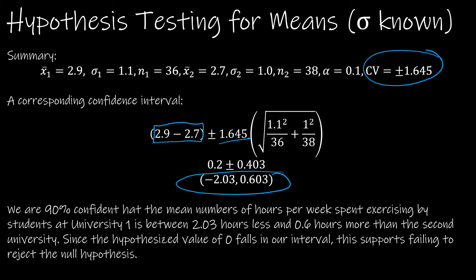So when I'm writing my conclusion, I'm saying what the interval means. I'm 90% confident that the mean number of hours per week students spent exercising by students at University 1 is between 2.3 hours less and 0.6 hours more.